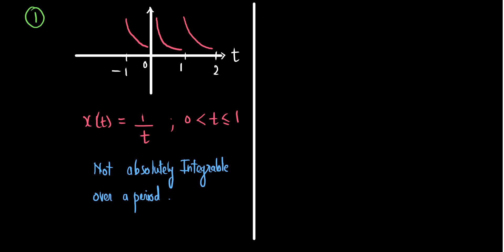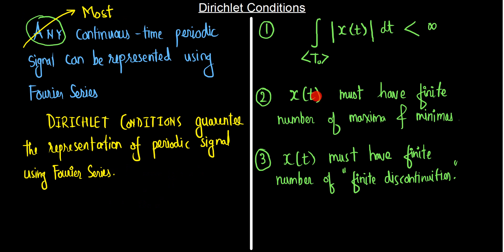Now let's take another example of a signal that may be absolutely integrable but might not satisfy other properties. We are going to see a signal that violates the second Dirichlet condition. The second Dirichlet condition says that the signal itself must have a finite number of maximas and minimas. Let's take a signal which has an infinite number of maximas and minimas.